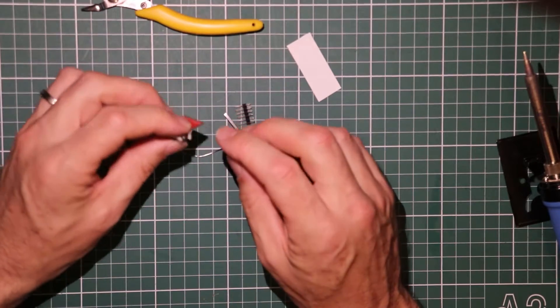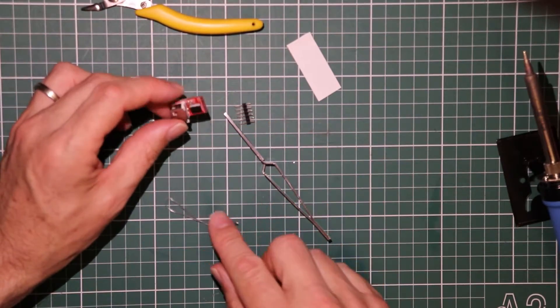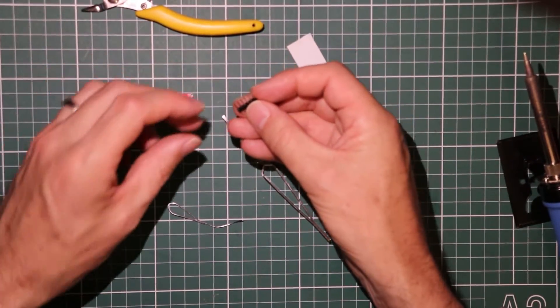Now you should get those two front legs just protruding through. And as I say, we want to use that to help anchor this to the main board.